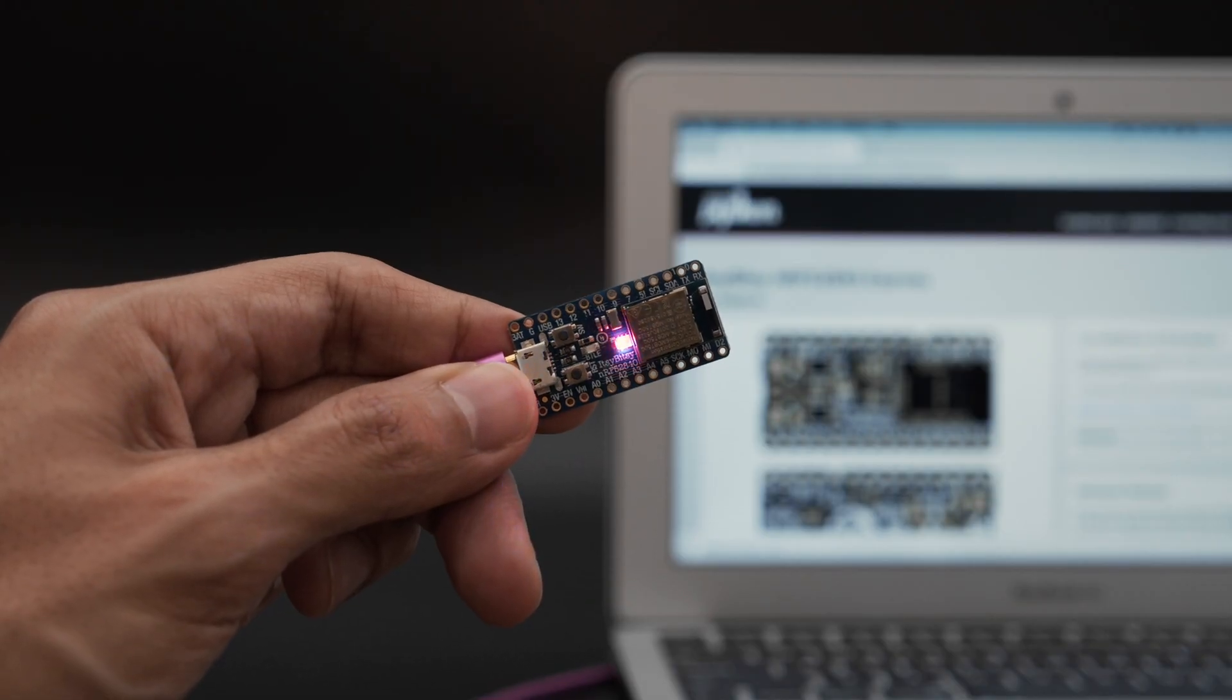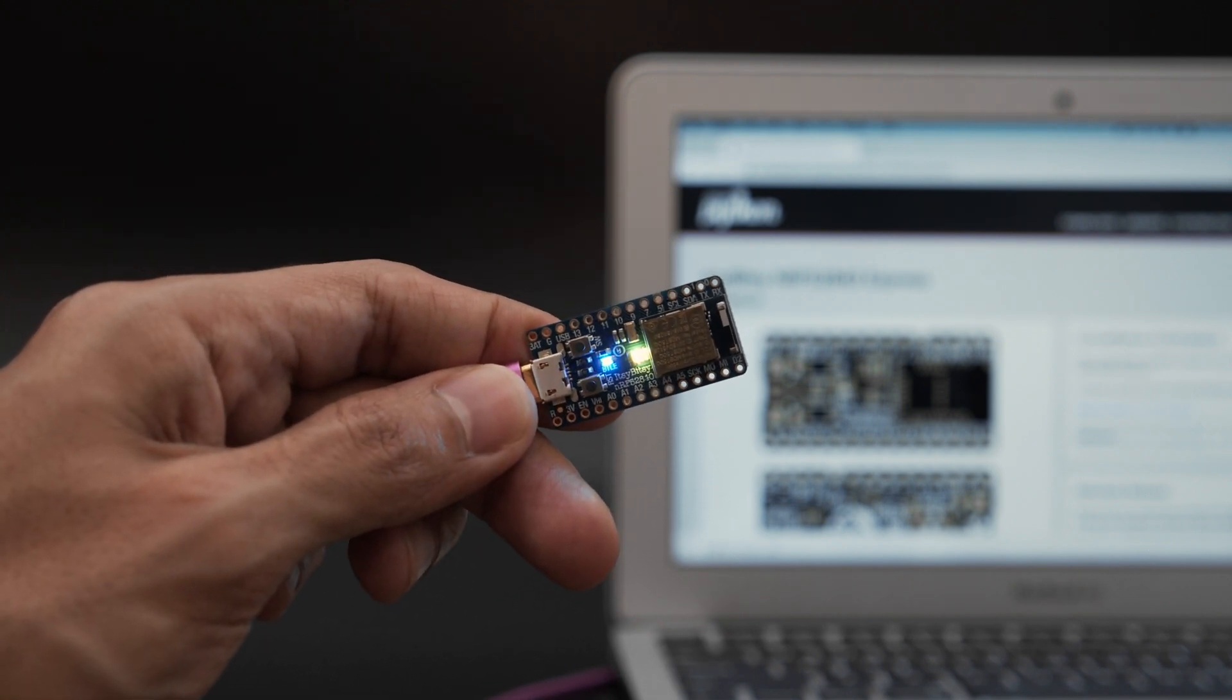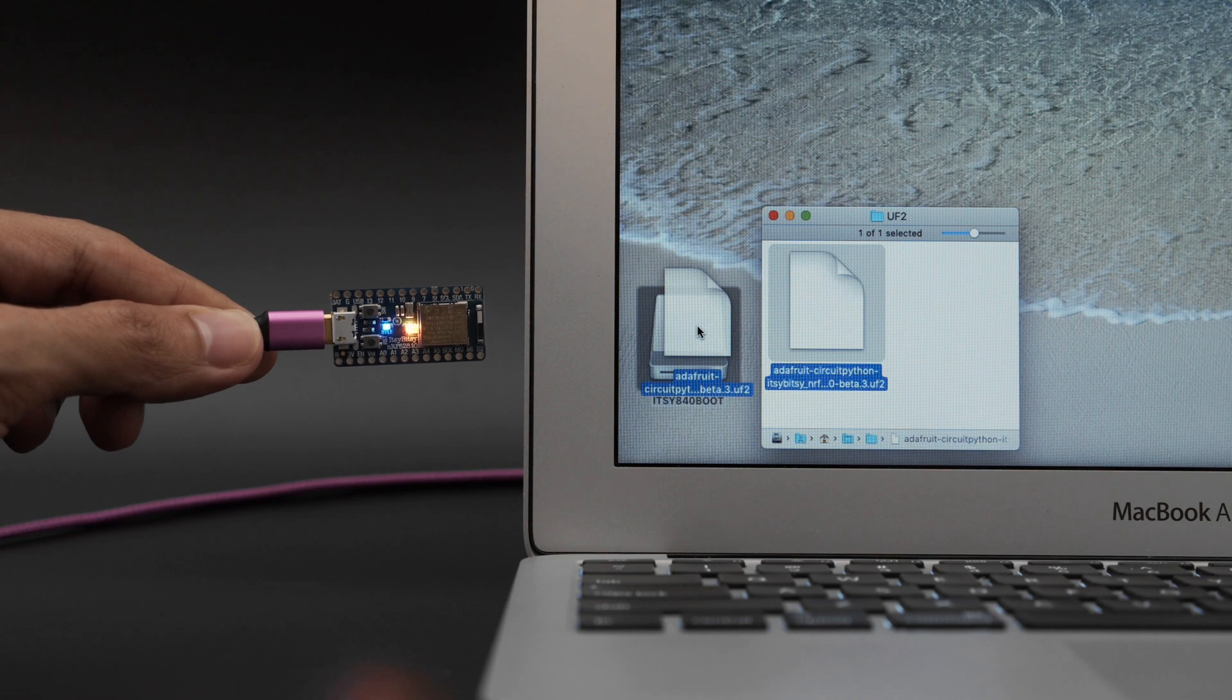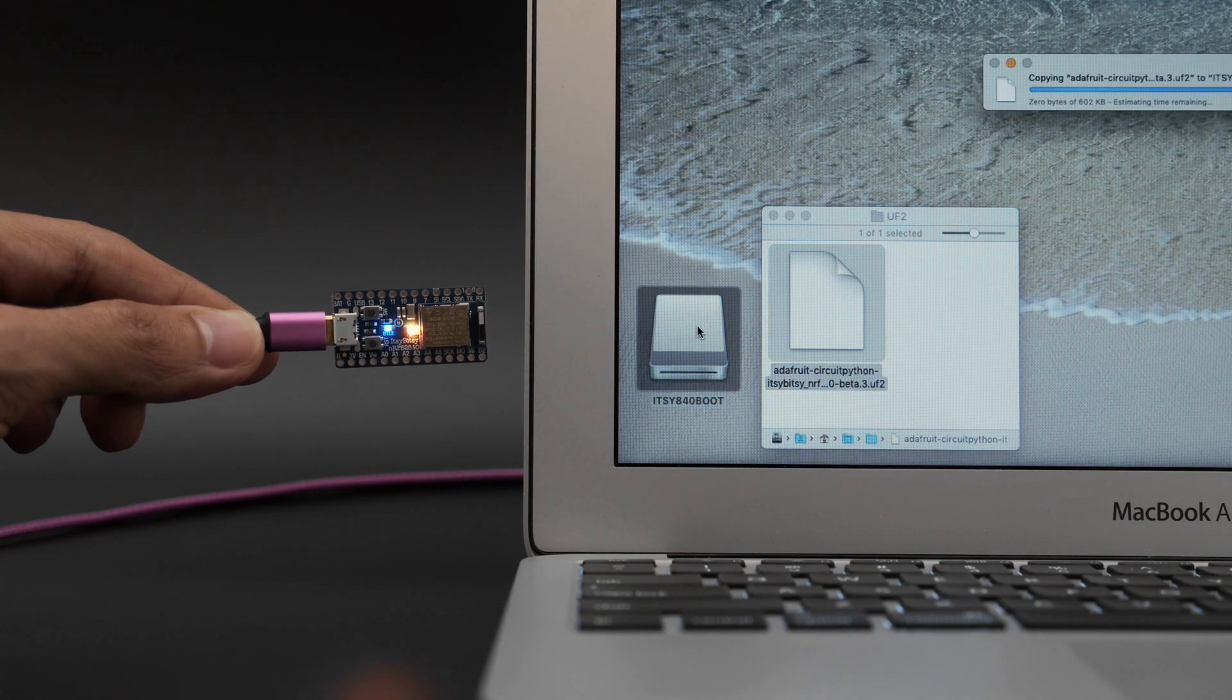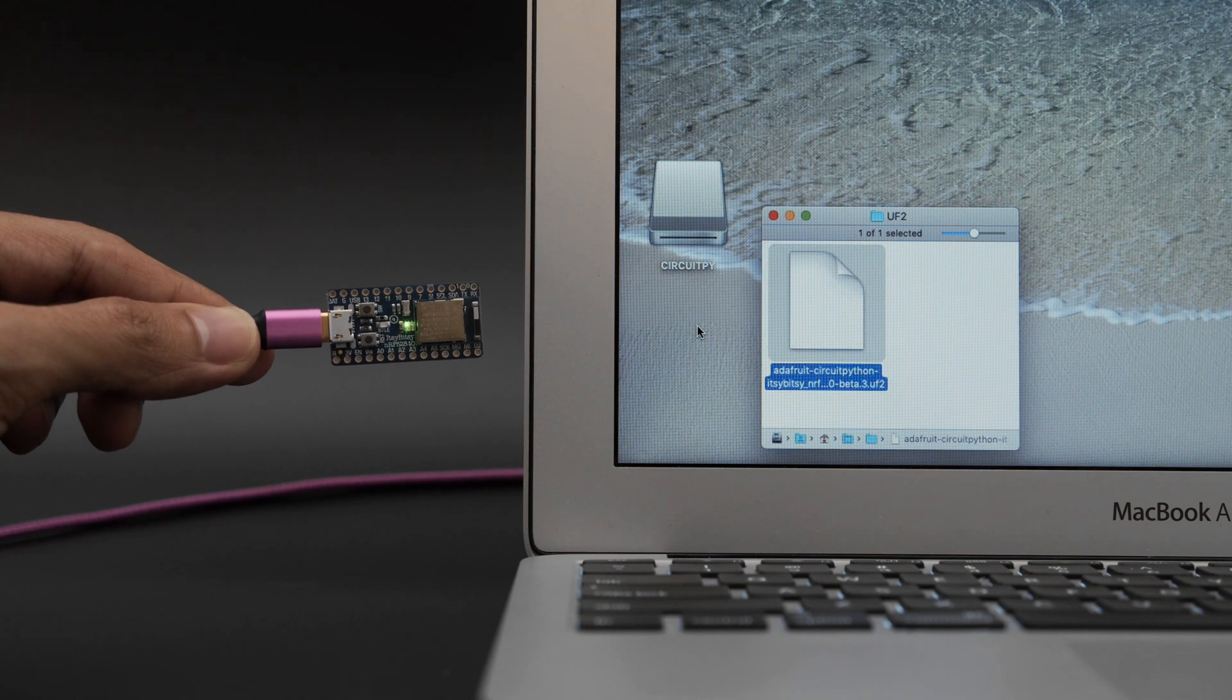You can double press the reset button to get your board into bootloader mode. The board shows up like a USB drive so you can just drag and drop a UF2 file. It automatically installs the firmware so it's really easy to upgrade to future releases.